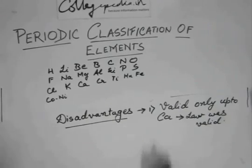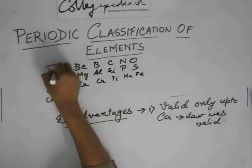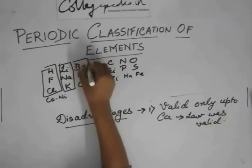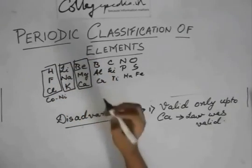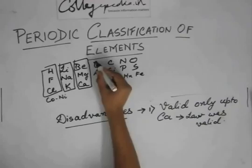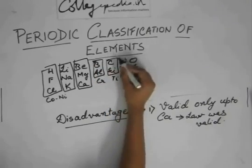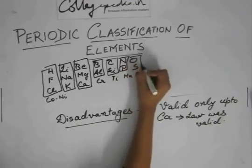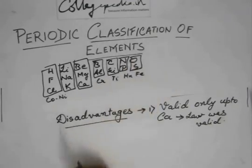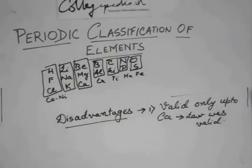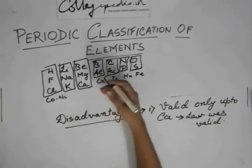So his law was valid only for these three things - this, this, and after calcium this did not come, so it was only this much. So he could find only these few groups. The other things did not match with the properties.